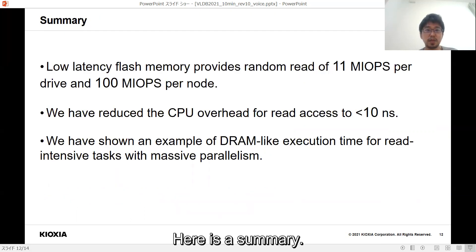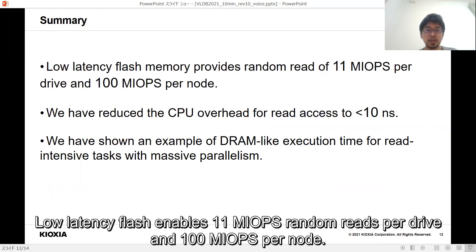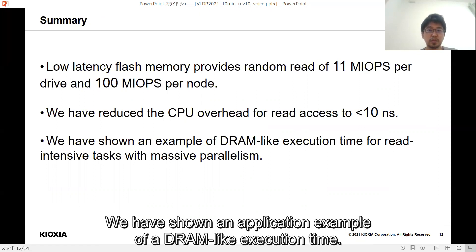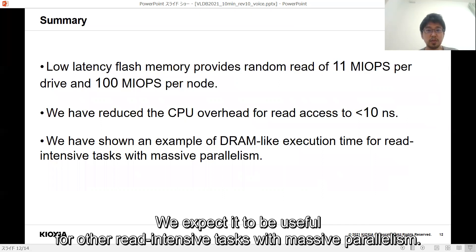Here is a summary. Low latency Flash enables 11 million IOPS random reads per drive and 100 million IOPS per node. We have reduced the CPU overhead for random read access to less than 10 nanoseconds. We have shown an application example of a DRAM-like execution time. We expect it to be useful for other read-intensive tasks with massive parallelism.